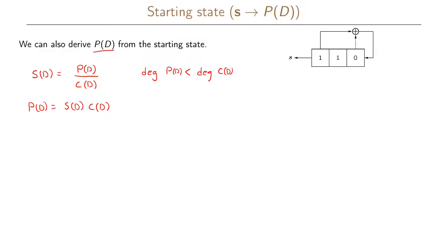Since we have the shift register given here, we immediately know our connection polynomial. The connection polynomial can be written as 1 — the 1 comes from C0 equals 1 — plus D, which comes from C1 equals 1, and then plus D cubed, which comes from C3 equals 1.